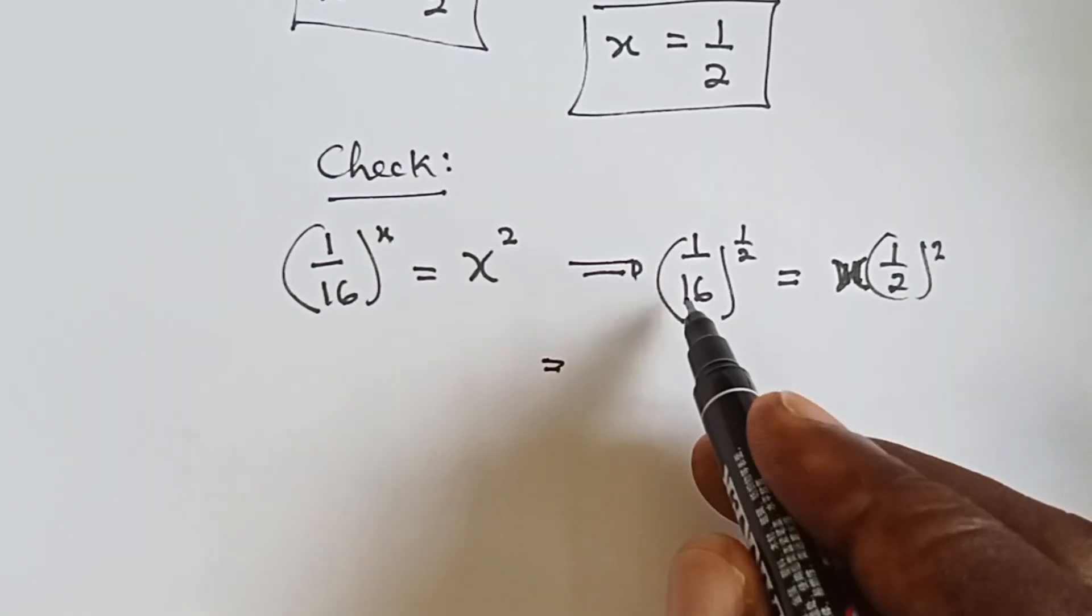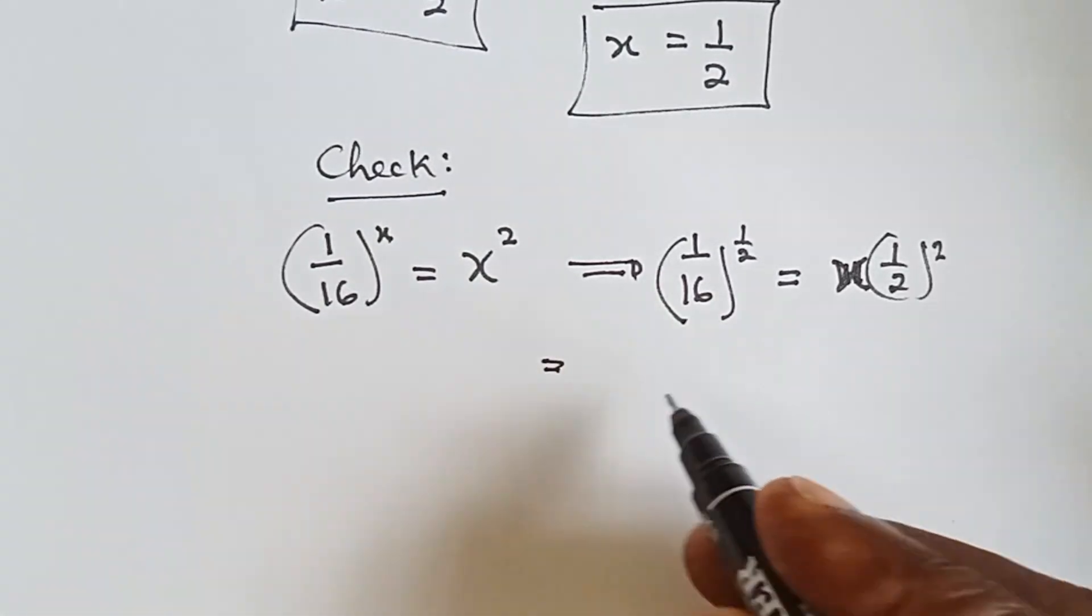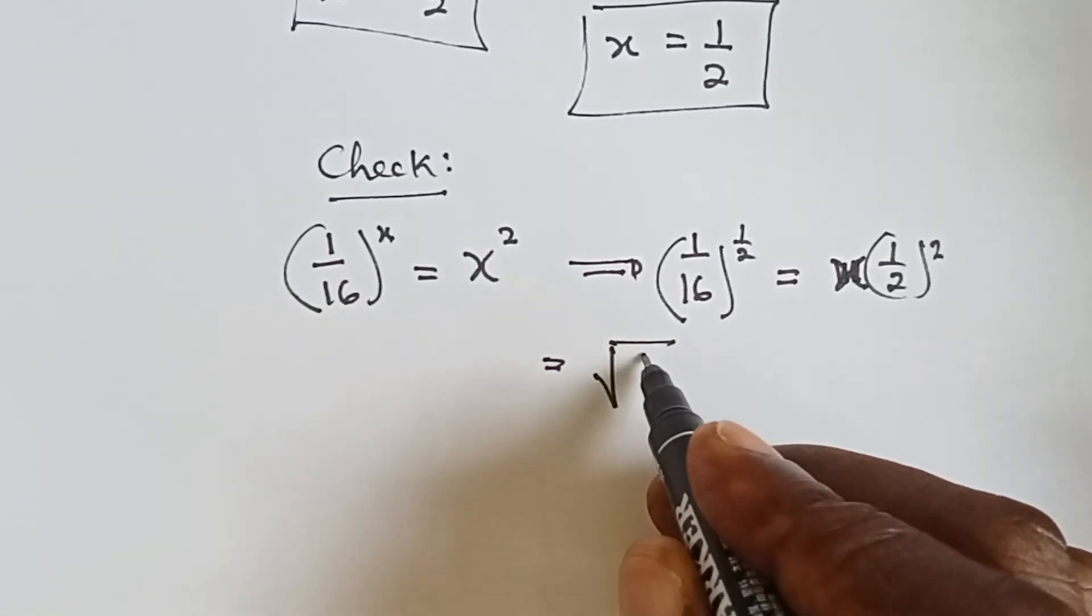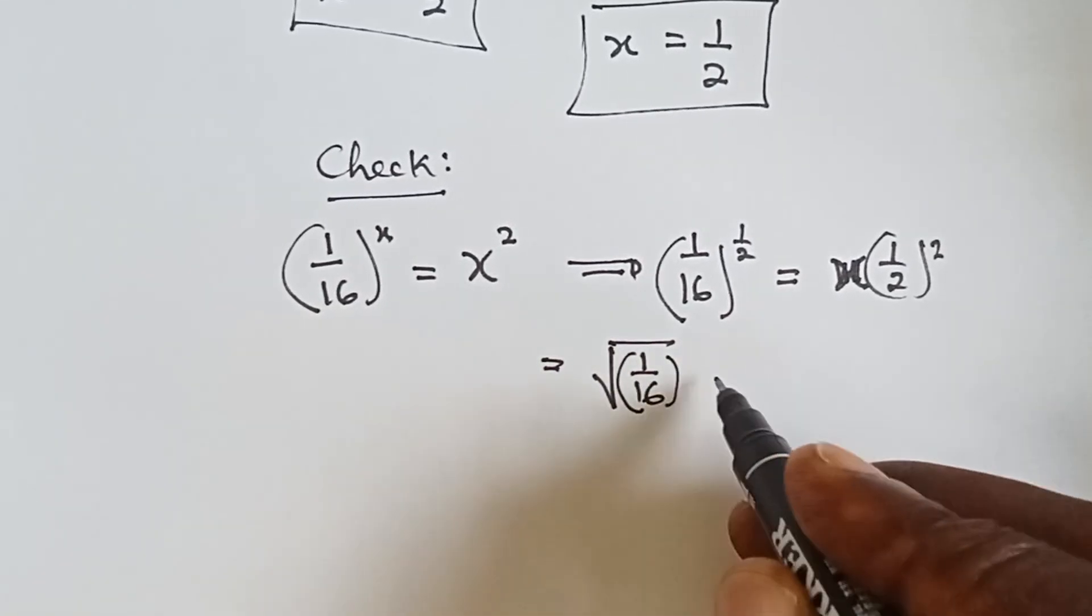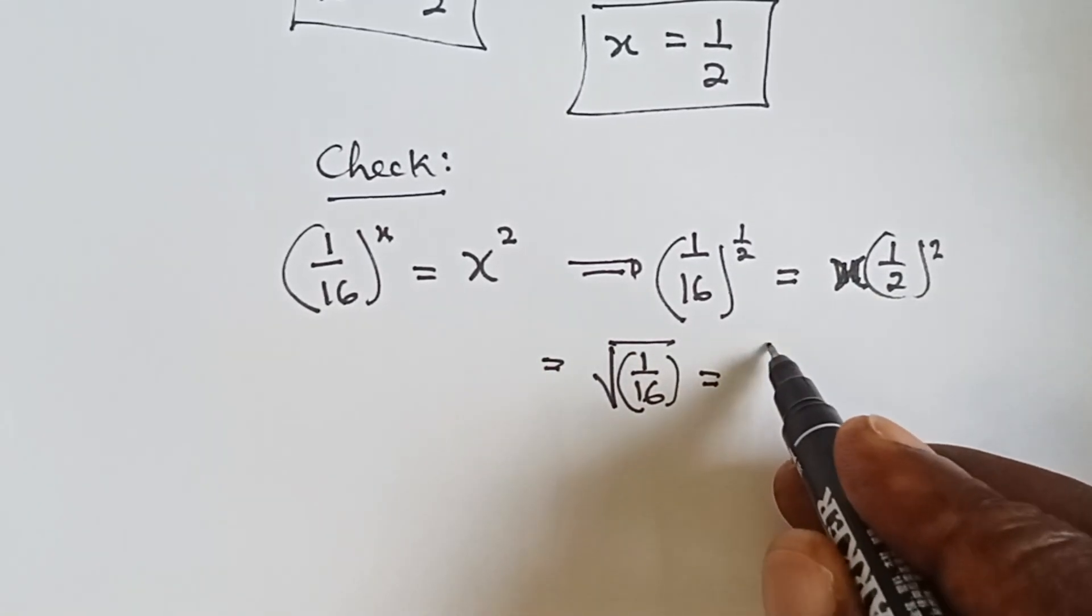Alright, so what is 1 over 16 raised to power 1 over 2? It means square root of 1 over 16, that is what it means, equals to here we have 1 over 4.